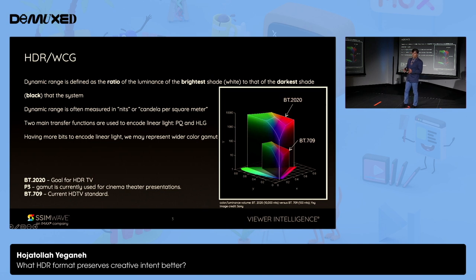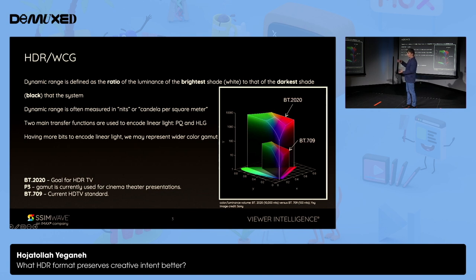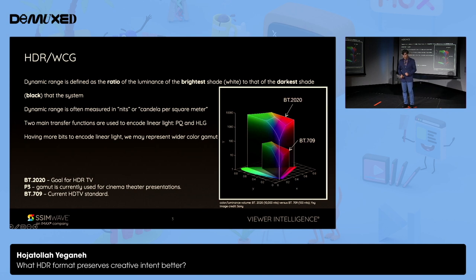Let's briefly touch on HDR WCG. What is HDR WCG? Most of you already know about this, but if you wanted to talk about high dynamic range WCG, we are talking about a larger volume — we are encoding higher nits and we are encoding wider dynamic range. So we have different color gamuts: BT-709, P3, BT-2020. Essentially HDR or WCG is about encoding a larger color volume.